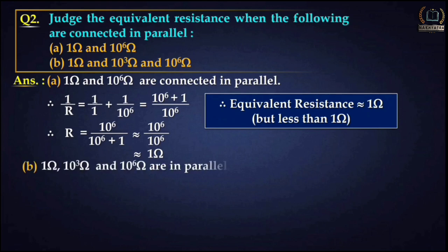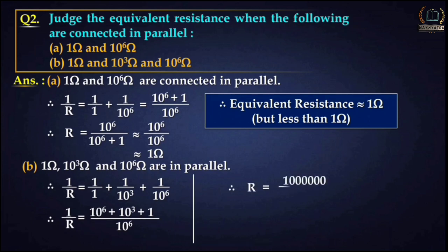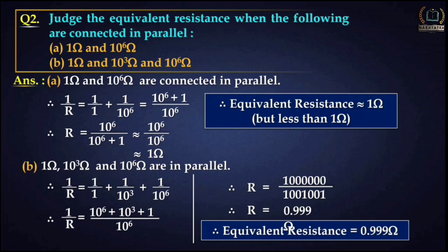For part b, 1 ohm, 10³ ohm, and 10⁶ ohm are in parallel. Writing the formula for parallel resistance and putting in the values, after solving we get R equal to 0.999 ohm. Therefore the equivalent resistance equals 0.999 ohm.